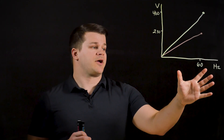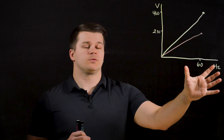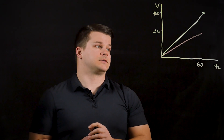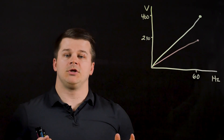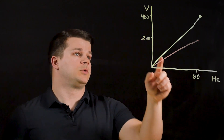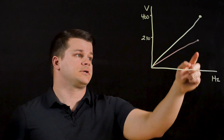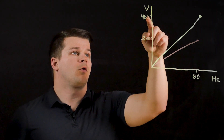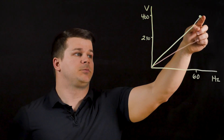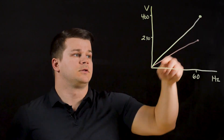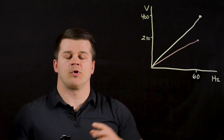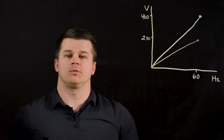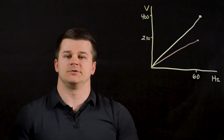In this graph you can see the frequency on the x-axis and the voltage on the y-axis. A common US winding will be 230V 60 Hertz as seen here, or 460V 60 Hertz seen up here. These lines represent the two different ratios between frequency and voltage of these motors.